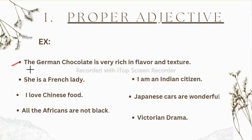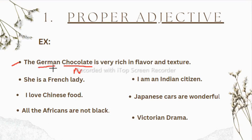Now let us see proper adjectives in examples. The first one is 'the German chocolate.' As we know, chocolate is a concrete noun — something we can taste or see. To show the quality of this chocolate, we use the word 'German,' which is the adjective here.